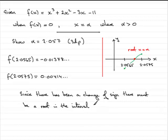There must be a root in the interval, and we could write that interval. 2.0565 to 2.0575. We often write intervals in square brackets like this.